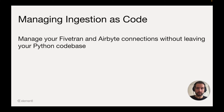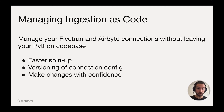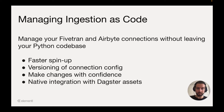This feature allows you to manage your Fivetran and Airbyte connections without leaving your Python code base. This approach provides a whole host of benefits to teams both large and small, including faster spin-up, letting you bypass time-consuming and often error-prone UI interactions, the ability to version your assets alongside the rest of your Python code, and the corresponding capability to make changes with confidence, including a full dev cycle of reviewing, merging, and reverting changes as needed. And finally, native integration with Dagster assets, making it easy to connect ETL ingestion with any upstream or downstream dependencies.